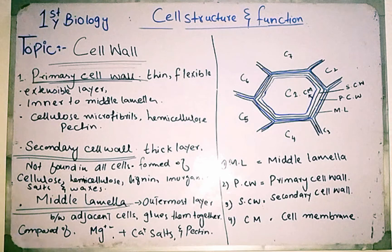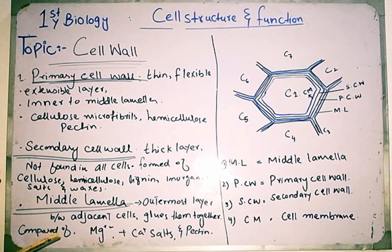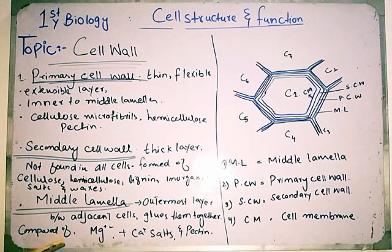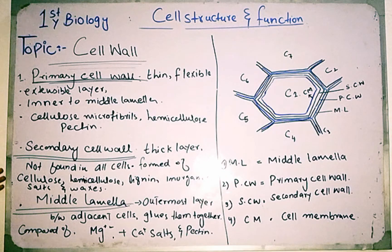The primary cell wall is present in almost all types of plant cells. It is present in newly growing cells during cell division. The plant cell secretes the primary cell wall by itself. The primary cell wall is a very thin, flexible, and extensible layer. It is present inner to the middle lamella.